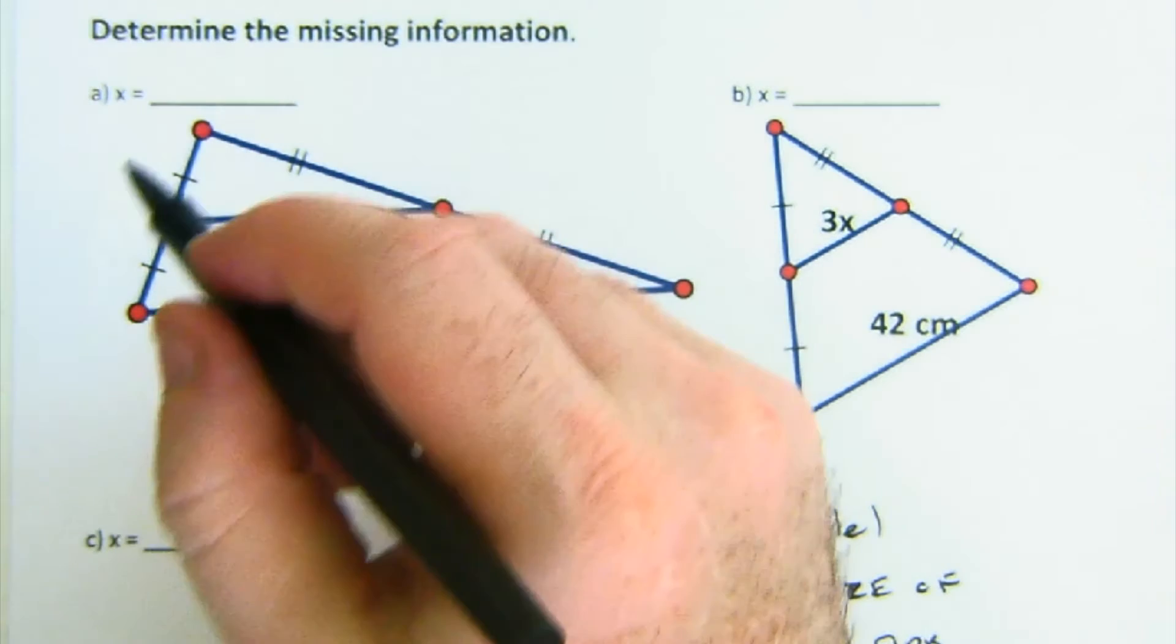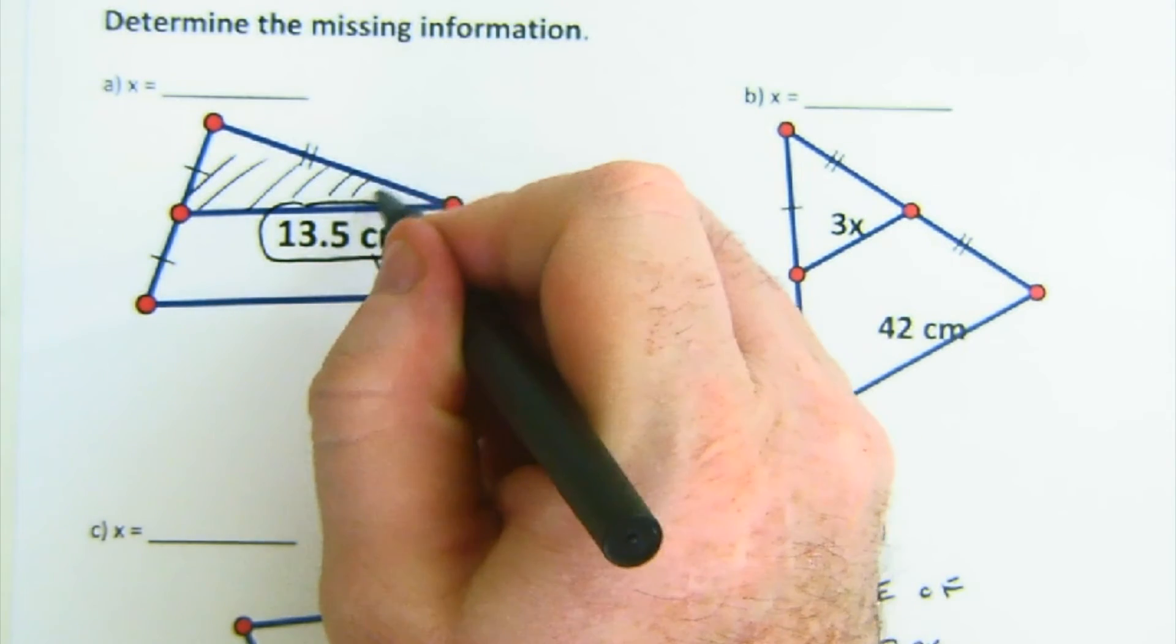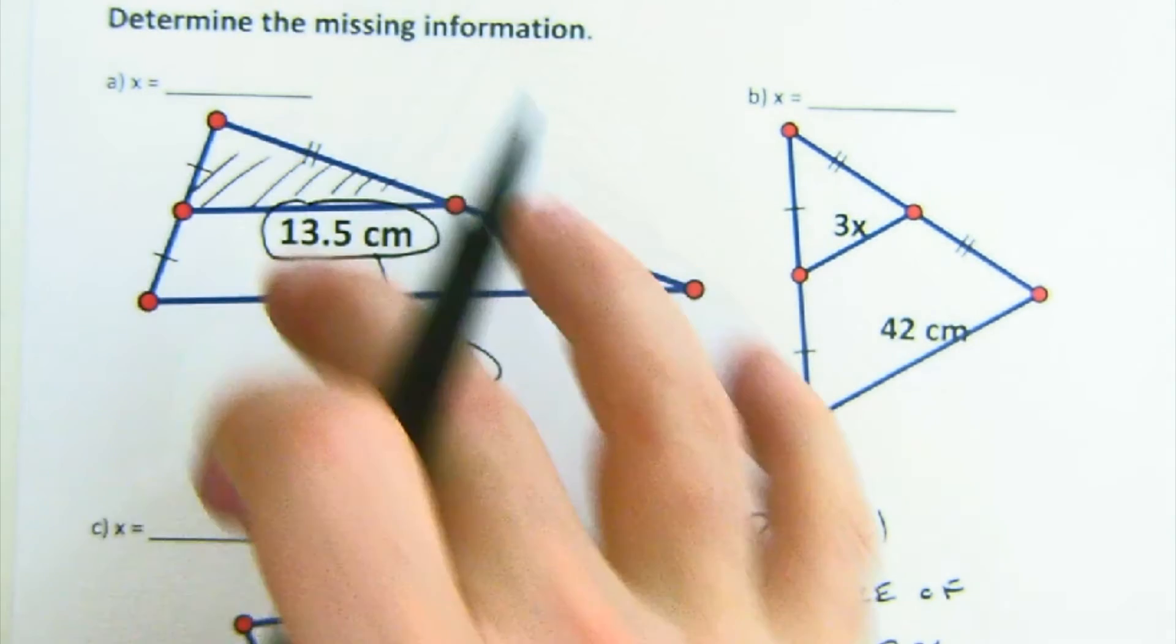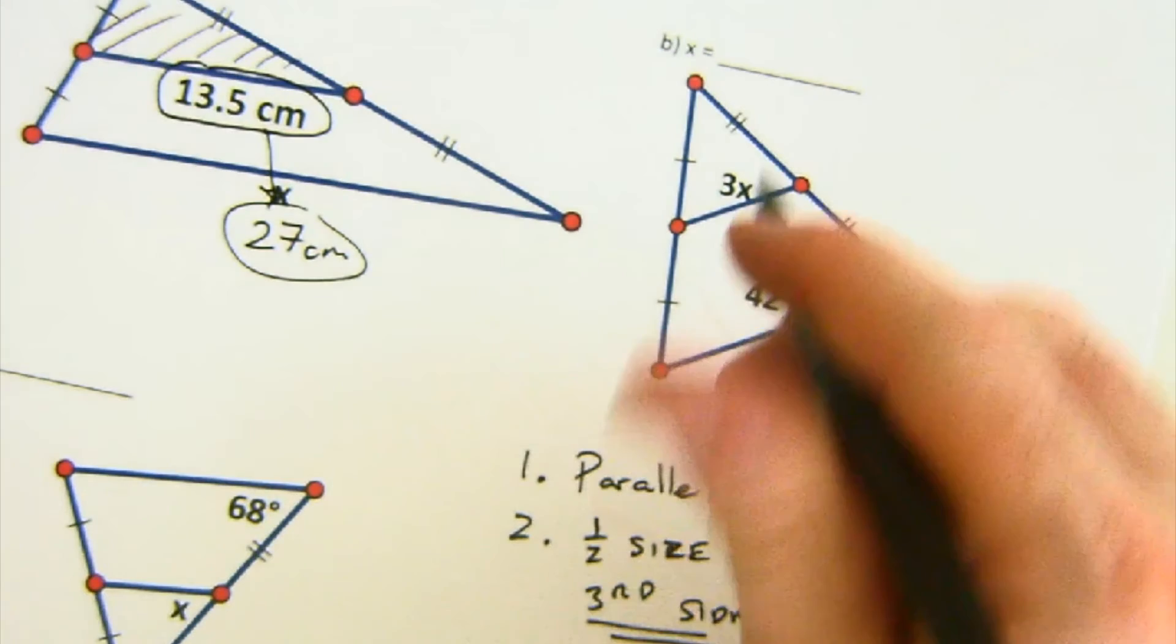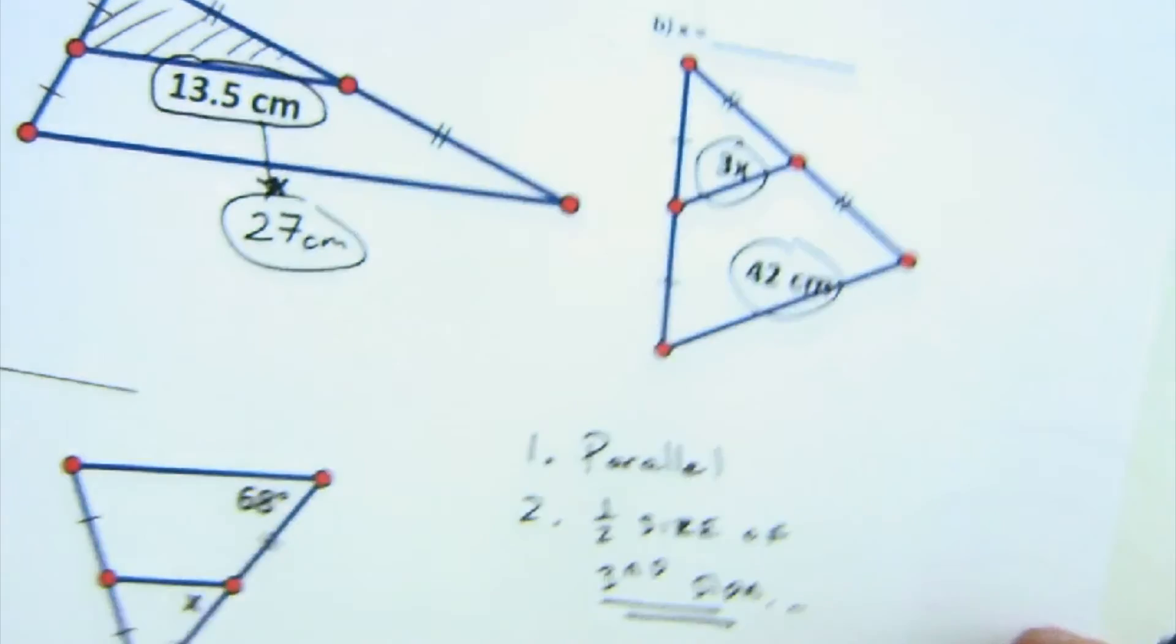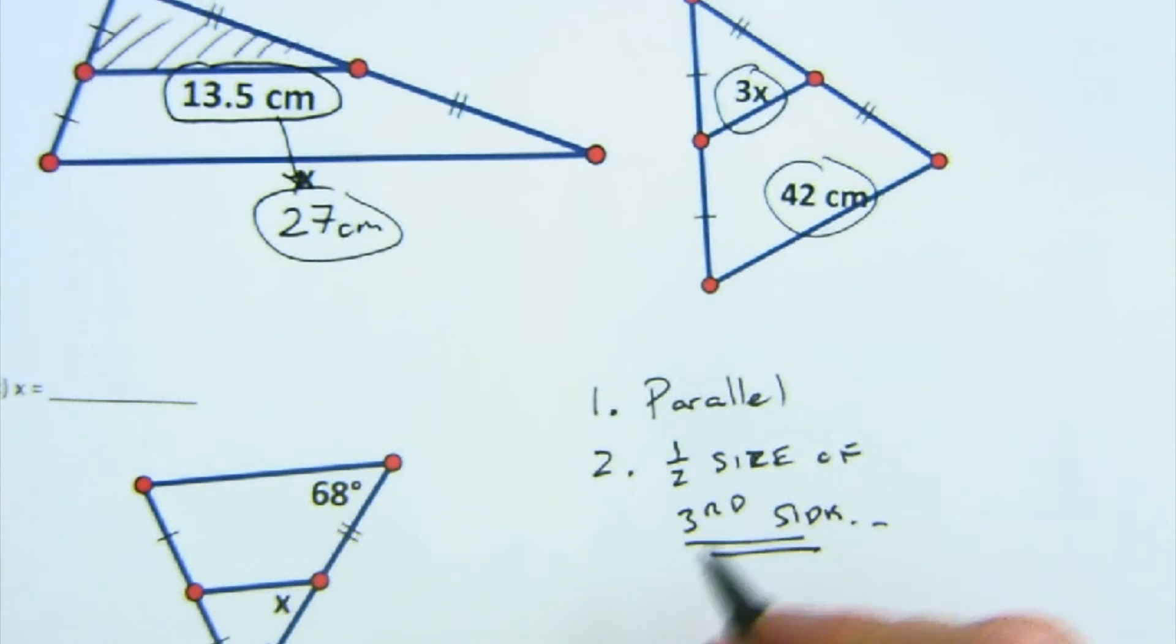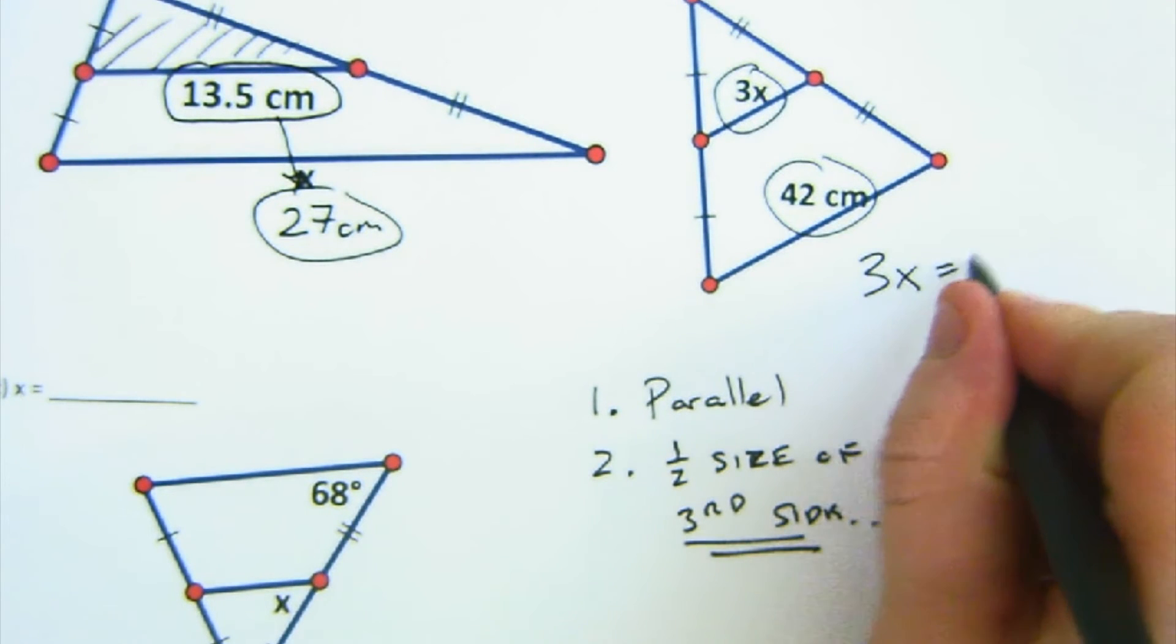And again, as I just said previously in the theory part, basically this little triangle is getting dilated out. This one's more interesting because I have 3x and this is 42. Now, a lot of students will just say, oh, 3x equals 42. This is not correct.